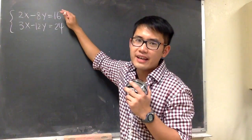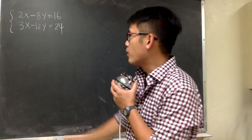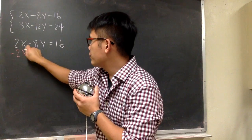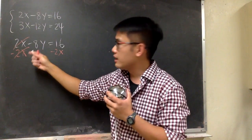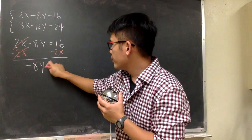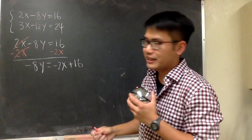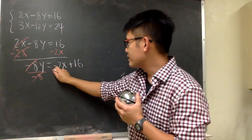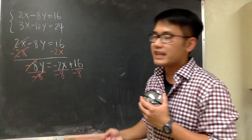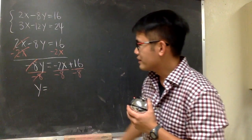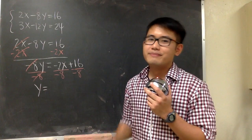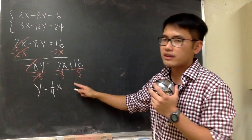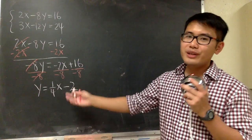This is the second situation. Now let's look at the third one. Take the first equation — 2x - 8y = 16 — and put it in y = mx + b form. Subtract 2x from both sides: -8y = -2x + 16. Divide by -8: y = (-2)/(-8) x + 16/(-8), which gives y = 1/4 x - 2. We are ready to graph.